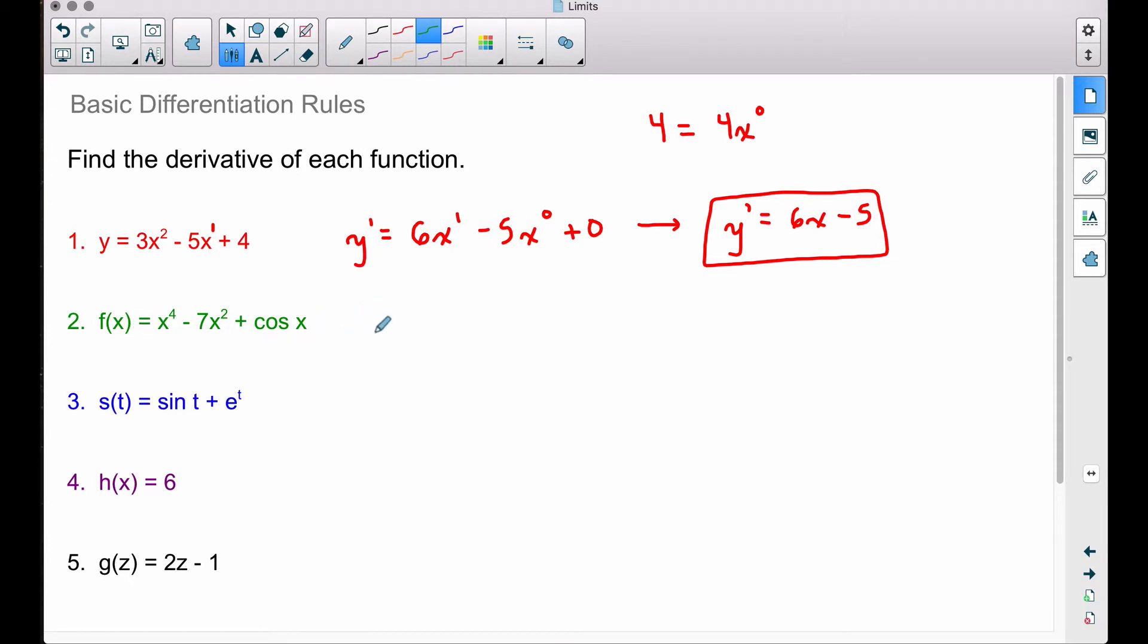For this second example here, f prime of x. Now we don't have a polynomial term here, but this term right here is technically a polynomial term. Apply what's called the power rule here. We pull the 4 down and we multiply it by understood 1, so we have 4x to the 3rd now. Remember, we subtract 1 from that exponent.